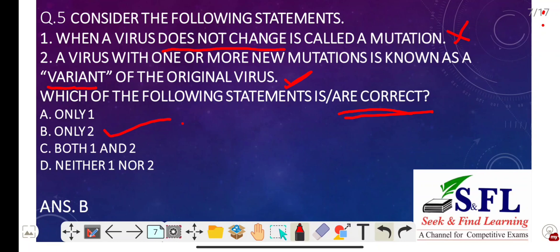Mutation actually happens when a virus replicates and makes copies of itself — sometimes it changes a little bit, which is normal for a virus. These changes are known as mutations. The first statement says 'does not change,' which is incorrect. A virus with one or more new mutations is known as a variant of the original virus.